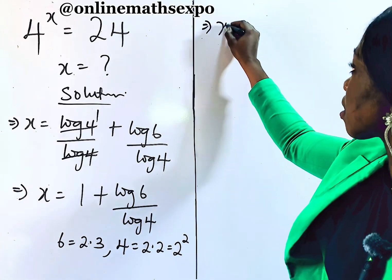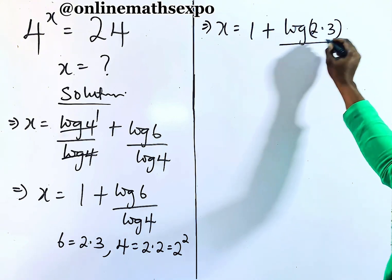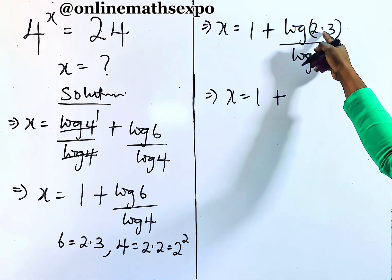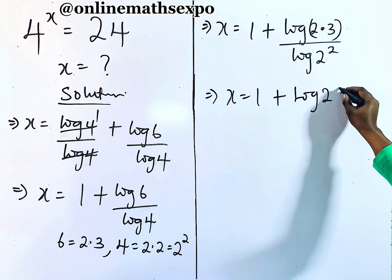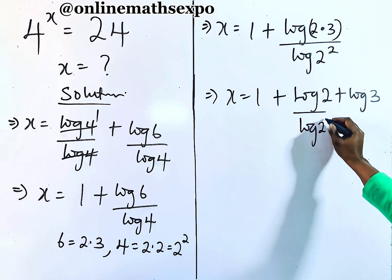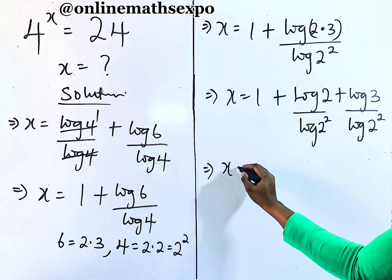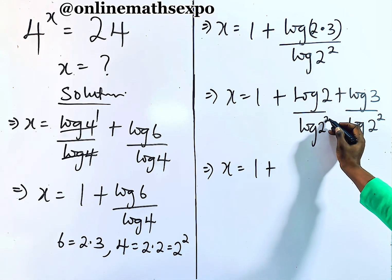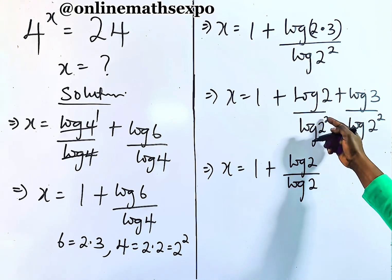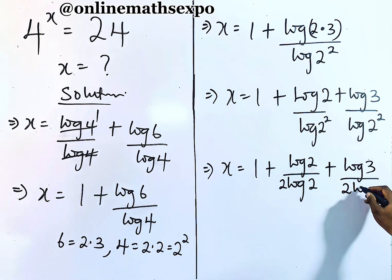Let's keep going to have x is equal to 1 plus log of (2 × 3) divided by log of 2 squared. Remember for the numerator, log of (2 × 3) is the same as log 2 plus log 3, divided by log of 2 squared. Also, applying the power rule on the denominator, the power multiplies: so we have 2·log 2 in the denominator. This gives x equal to 1 plus (2·log 2 + log 3) divided by 2·log 2.